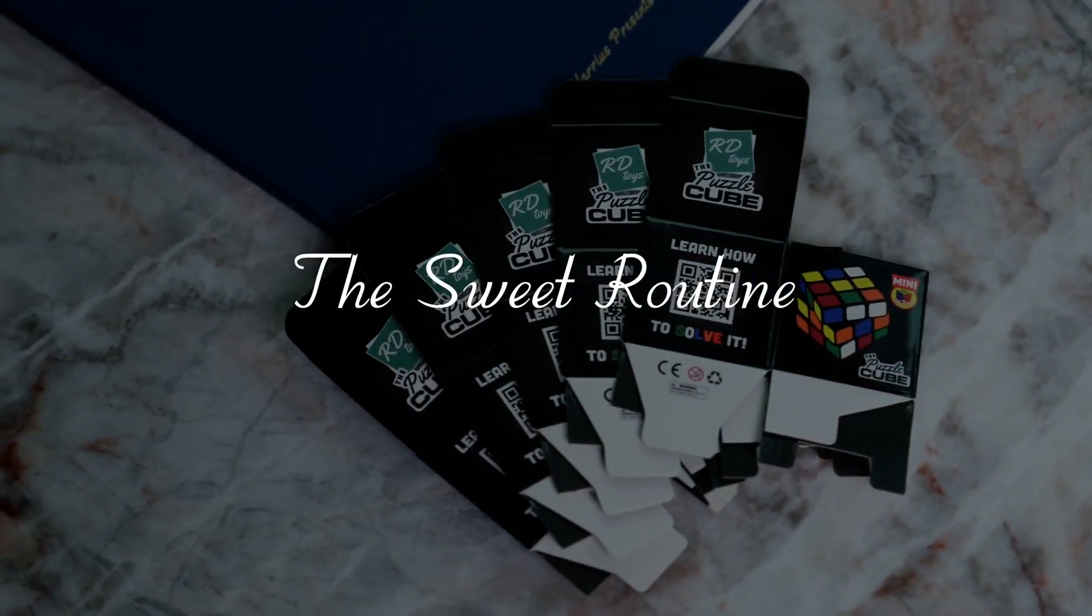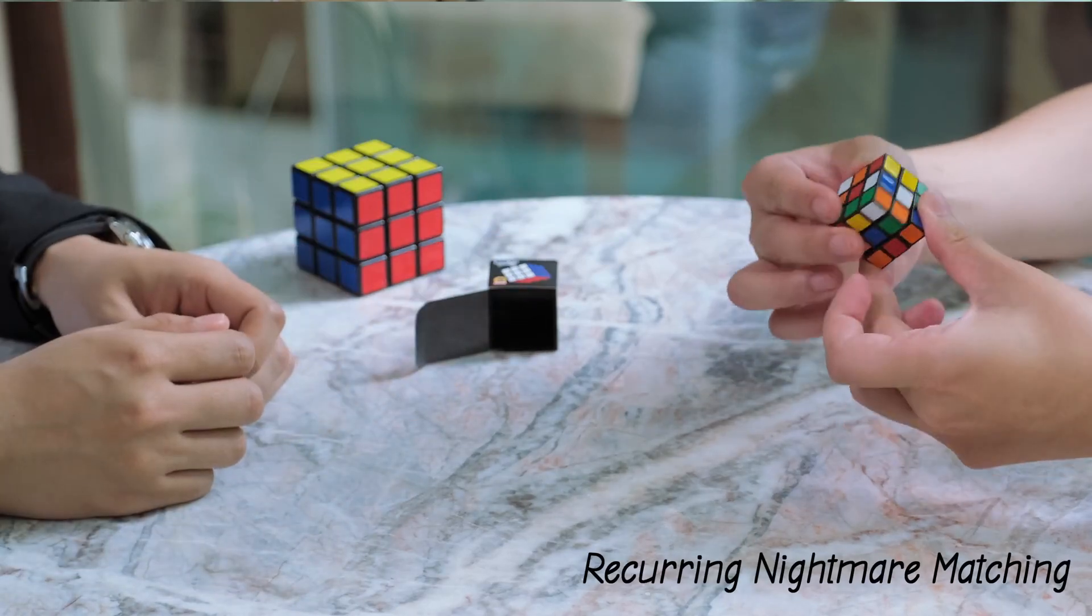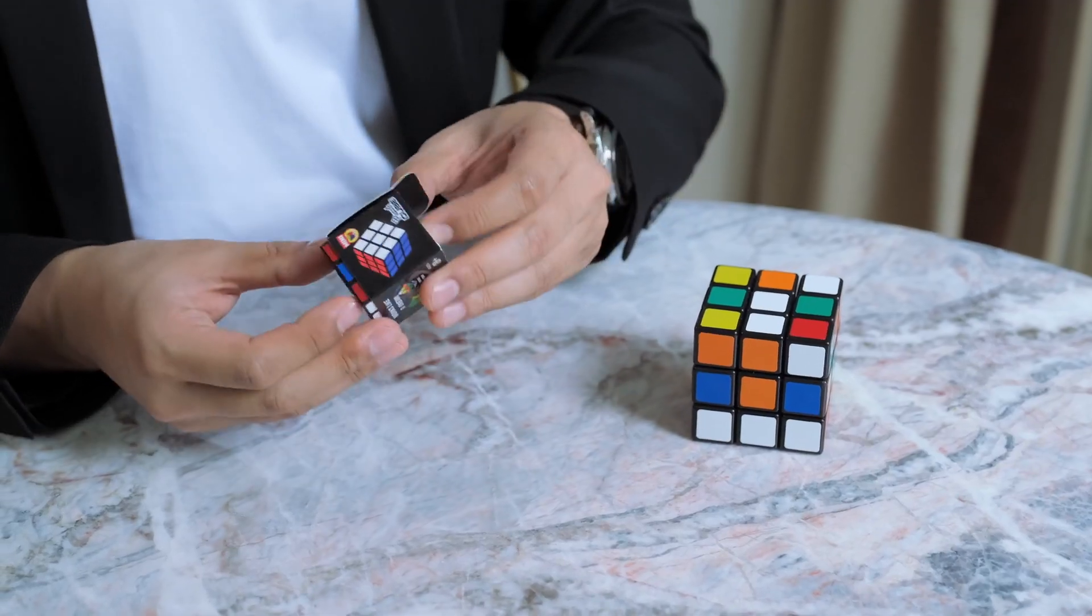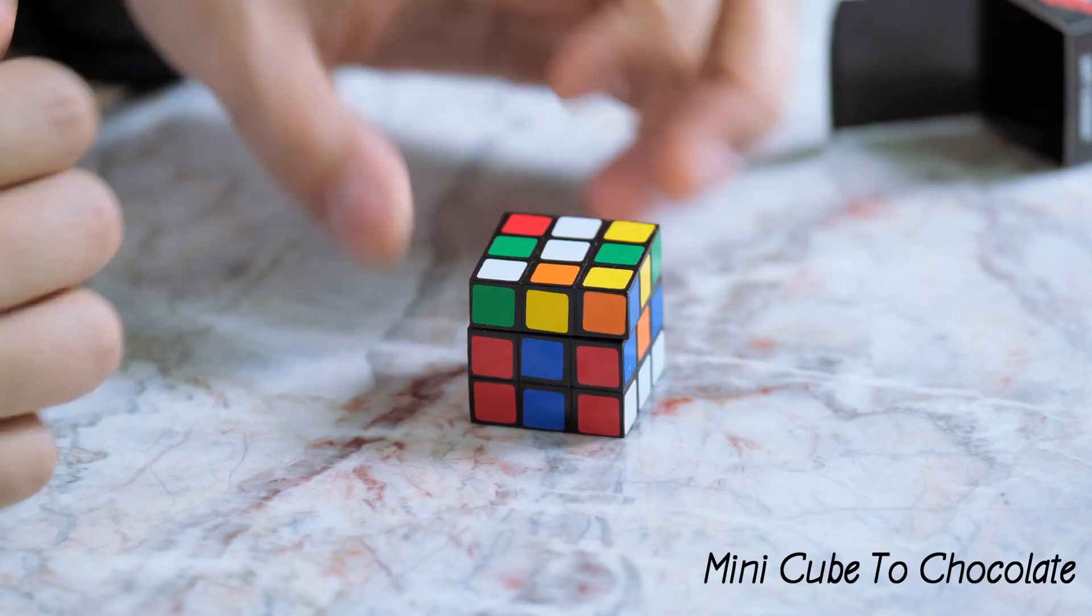And the Sweet Routine, the perfect matchup of our most beloved effects, where the recurring nightmare matching can be done with absolutely no sleights whatsoever and end with a crowd-pleasing mini cube to chocolate.